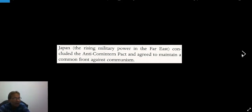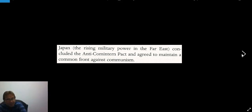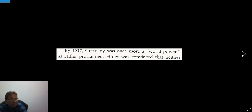Also in November, Germany and Japan — the rising military power in the Far East — concluded the Anti-Comintern Pact, or the Anti-Communist International Pact. That was the agency the Soviet Union was using to spread worldwide revolution, and Japan and Germany agreed to maintain a common front against communism. By 1937, Germany was once more a world power, as Hitler proclaimed.